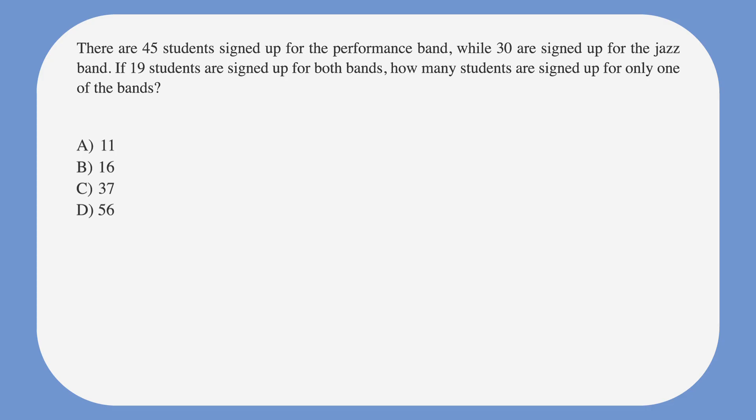Now let's look at a test problem that involves a Venn diagram. There are 45 students signed up for the performance band, while 30 are signed up for the jazz band. If 19 students are signed up for both bands, how many students are signed up for only one of the bands?